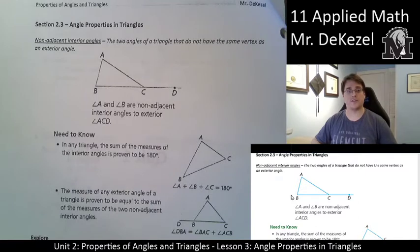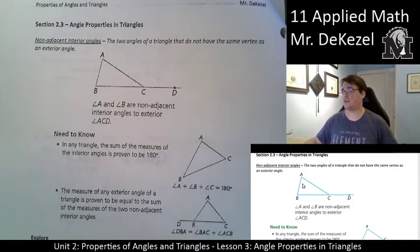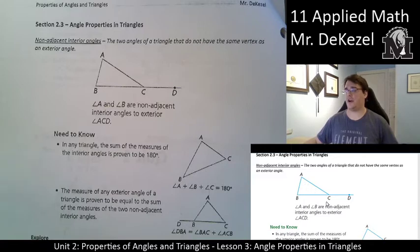So non-adjacent interior angles, the two angles of a triangle that do not have the same vertex as an exterior angle. So essentially, that would be A and B, because they are not touching C. And C is connected to this exterior angle, because this line seems to extend. Angle A and angle B are non-adjacent. They are not touching the line that extends out. Knowing these two angles is very different from knowing this angle here. It has very different implications.